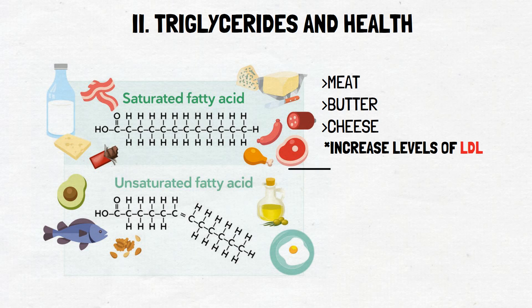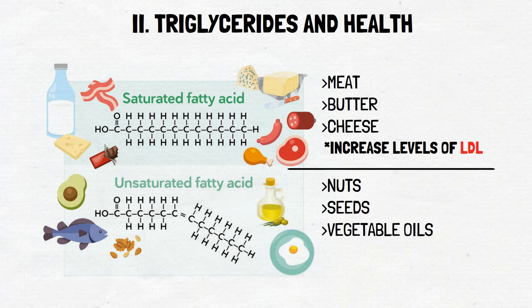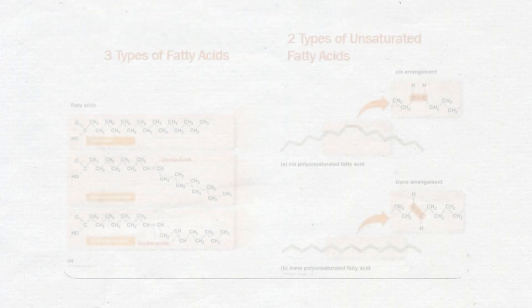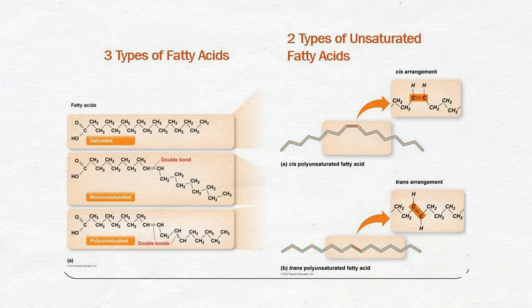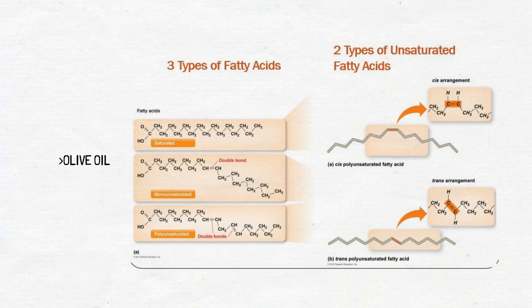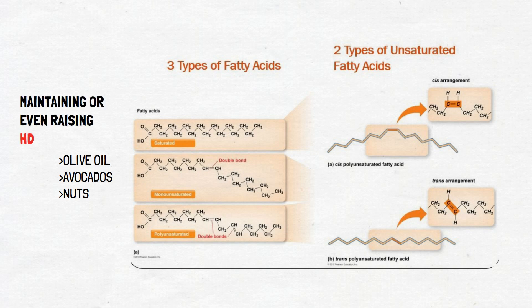A healthier version of fat is unsaturated fat. Unsaturated fats are typically liquid at room temperature and are found in plant-based foods such as nuts, seeds, and vegetable oils. Unsaturated fats can be further divided into two categories: monounsaturated fats and polyunsaturated fats. Monounsaturated fats are found in foods such as olive oil, avocados, and nuts. They are known to have a beneficial effect on cholesterol levels, lowering LDL cholesterol while maintaining or even raising HDL cholesterol, which is known as the good cholesterol.